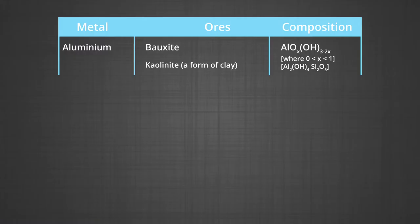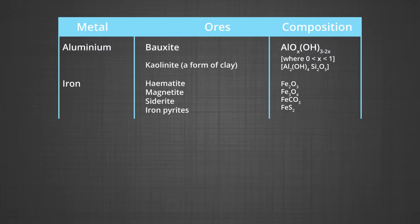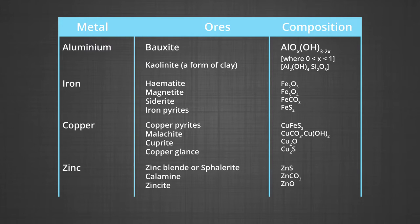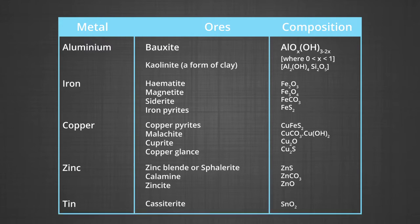Selection of ore forms a very crucial step in the metallurgy of a metal, as this decides on the economic viability of the process. The principal ores of some metals, as you can see in the table, are: for aluminum, bauxite (a hydrated alumina) and kaolinite (a form of clay, which is an aluminum hydroxide and silica complex). Principal iron ores are hematite, magnetite, and siderite. For copper: copper pyrite, malachite, cuprite, and copper glance. For zinc: zinc blende, calamine, and zincite. For tin: cassiterite.